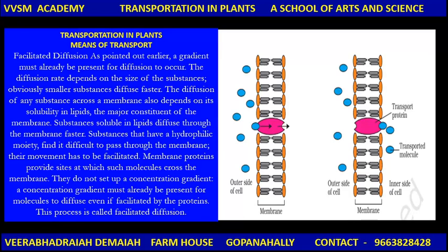The diffusion rate depends on the size of the substances — obviously smaller substances diffuse faster. The diffusion of any substance across a membrane also depends on its solubility in lipids. The major constraint of the membrane is they do not set up a concentration gradient; a concentration gradient must already be present for molecules to diffuse, even if facilitated by proteins. This is called facilitated diffusion. This is the outer side of the cell membrane, and this is the transport protein, or transport molecule, and the inner side of the cell.